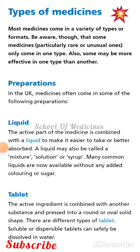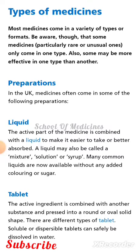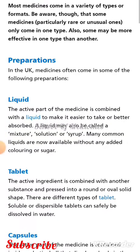Types of medicines. Most medicines come in a variety of types or formats. Be aware that some medicines, particularly rare or unusual ones, only come in one type. Also, some may be more effective in one type than another. In the UK, medicines often come in some of the following preparations.